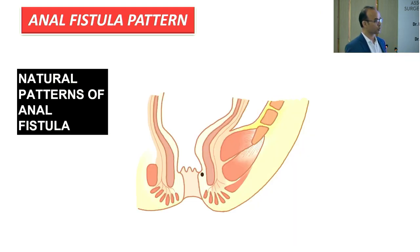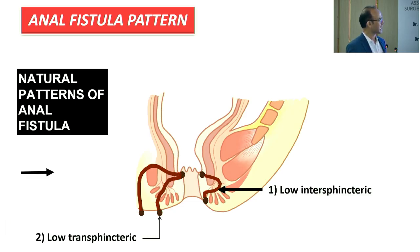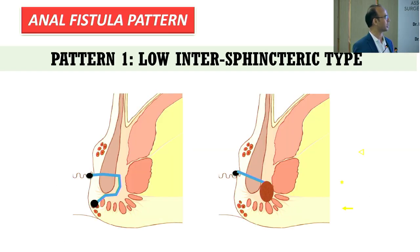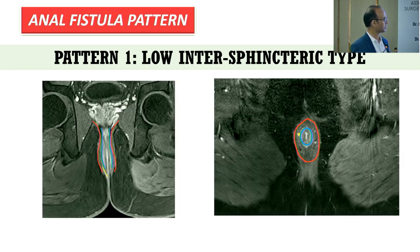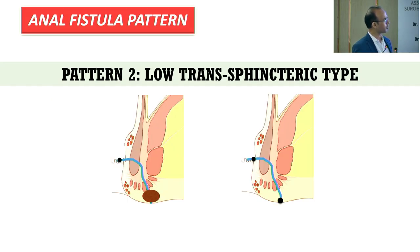Based on the pattern of travel, fistulas are classified into five types: low intersphincteric, low transsphincteric, anterior (deep perineum space), posterior (deep post-anal space), and high intersphincteric. For low intersphincteric fistula — whether abscess or fistula — treatment is simple: divide everything and allow healing in 3-4 weeks. This is sphincter-cutting surgery. For low transsphincteric, division of everything except the deep external sphincter (risk of incontinence) gives the best outcome.